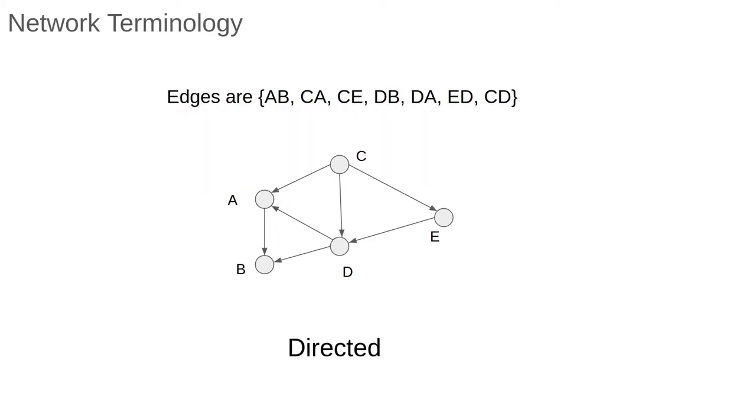Here's an example of a directed network. We represent this visually by putting arrows on the edges. So the edge AB implies we can go from A to B, but there is no edge BA so we can't go from B to A. You can think of this like a one-way traffic system or water flowing in pipes. Traffic or water is only allowed to travel one way following the direction of the arrows from node to node.